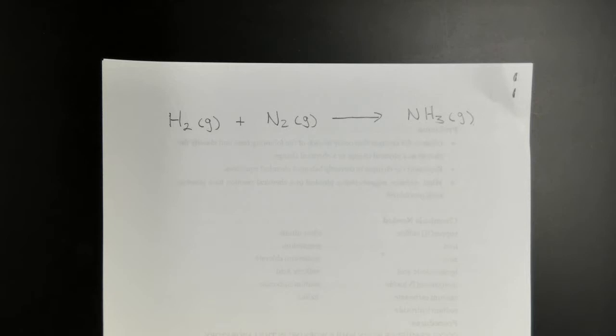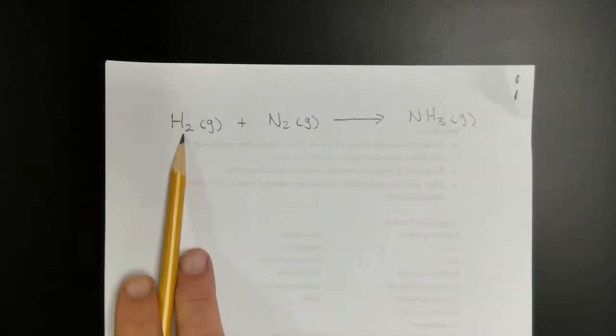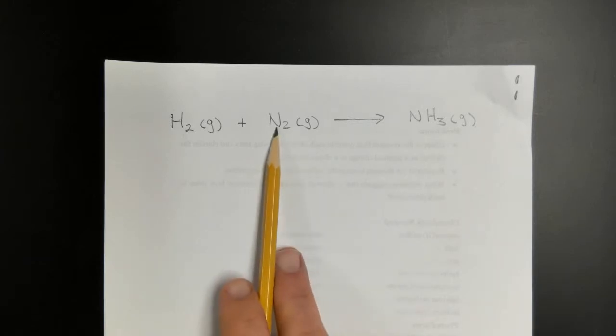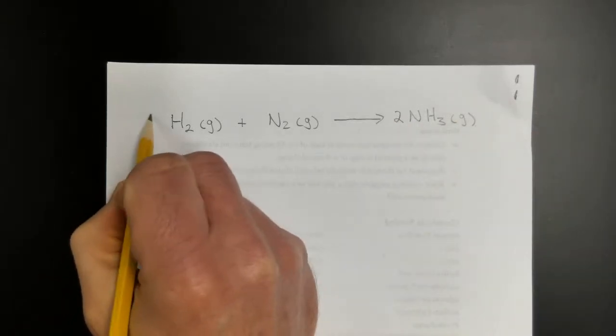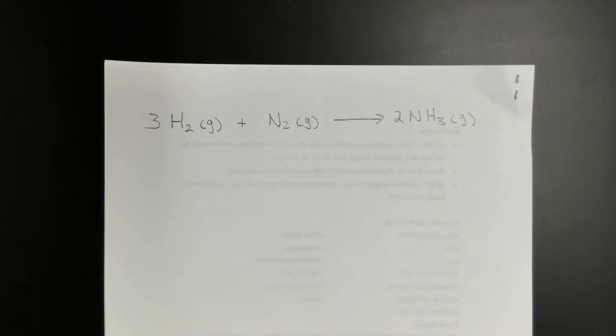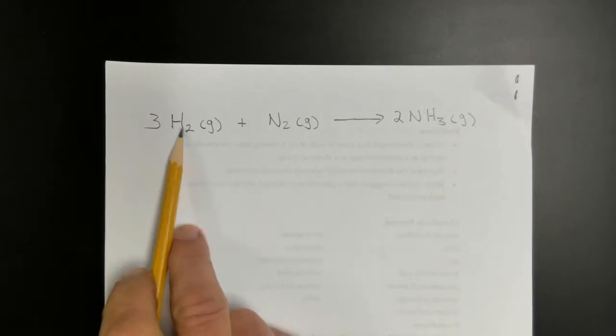I want to introduce the calculations used in percent yield, and I'm going to use this reaction right here — the Haber process, used in the manufacture of ammonia, which is important for fertilizers. We have hydrogen gas H₂ reacting with nitrogen gas to make ammonia. When faced with a percent yield or theoretical yield calculation, you need to make sure the chemical equation is balanced first. We can put a coefficient of two in front of ammonia and three in front of H₂ — so three moles of hydrogen gas reacts with one mole of nitrogen gas to produce two moles of ammonia gas.